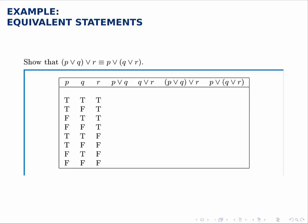Show that P or Q or R is equivalent to P or Q or R. Notice that the only difference is where the parentheses, the grouping, occurs.